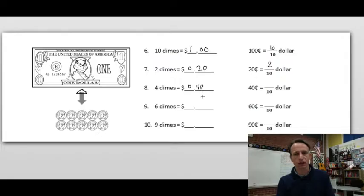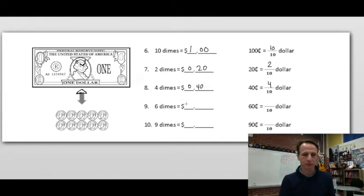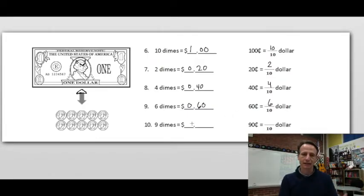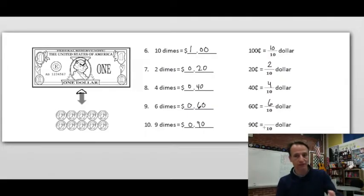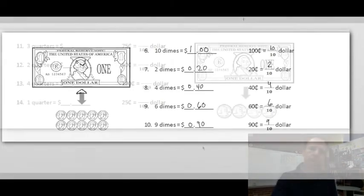40 cents is 40 hundredths of a dollar, but it's four dimes — four tenths of a dollar, four out of the 10 dimes you'd need to make a dollar. Six dimes: same thing — 60 cents is six tenths of a dollar, not 60 tenths; it's 60 hundredths. Nine dimes: 90 cents, 90 hundredths, nine tenths of a dollar — nine out of the 10 dimes you need. We already did 10 questions!